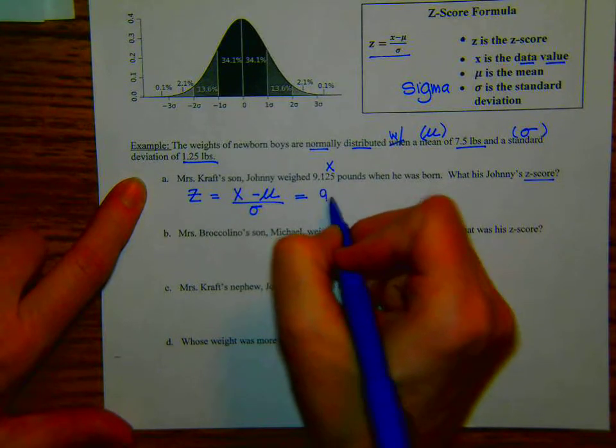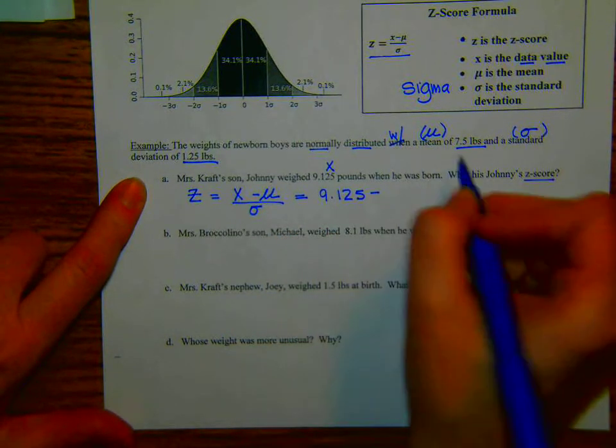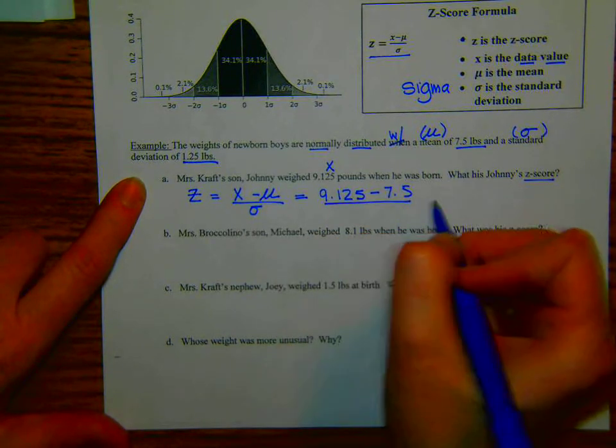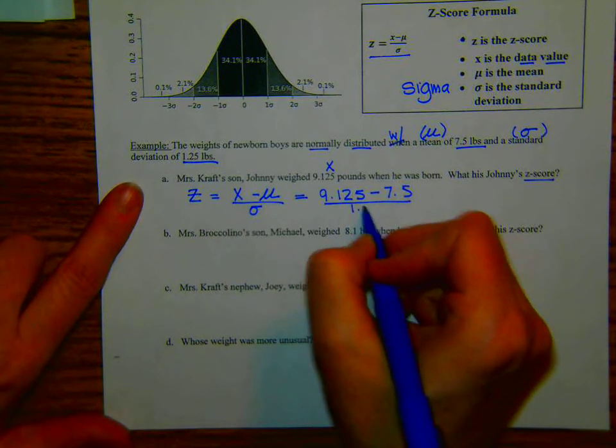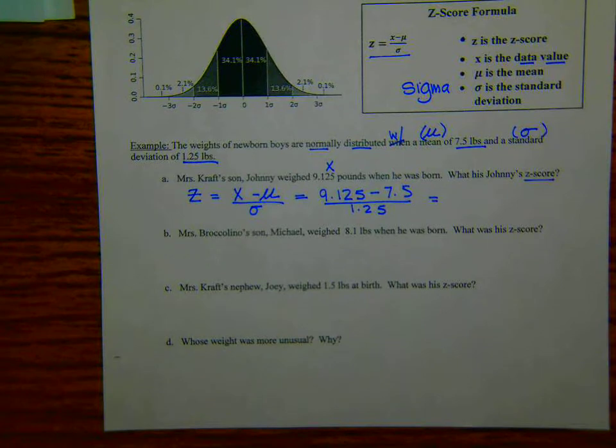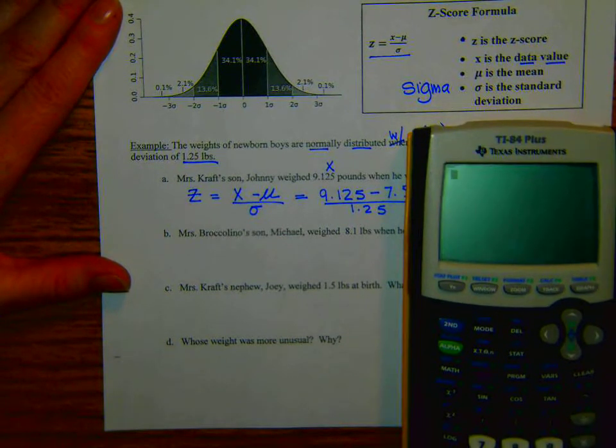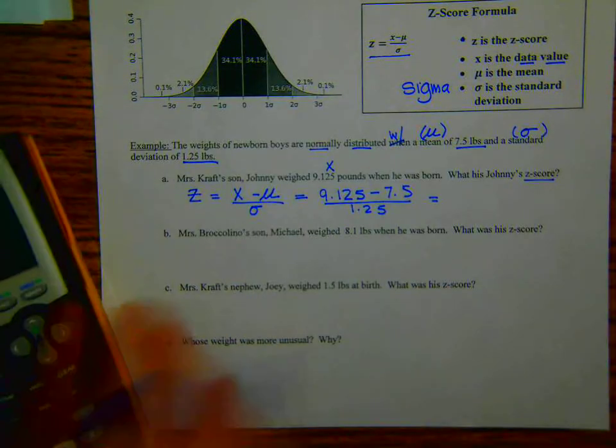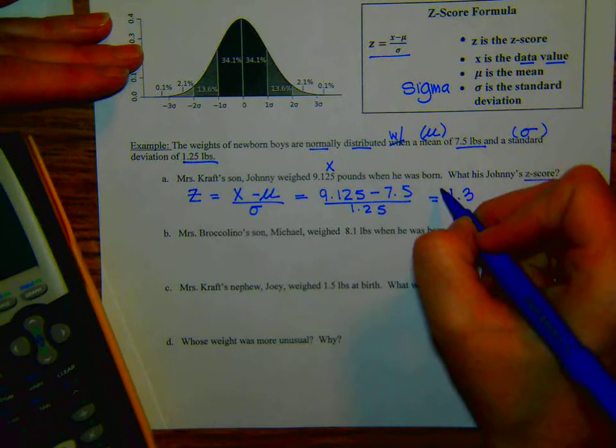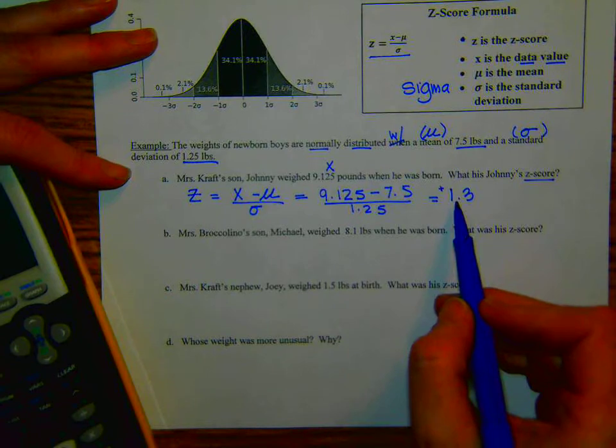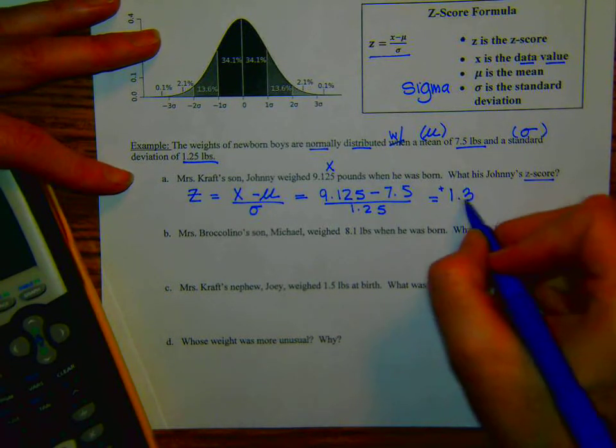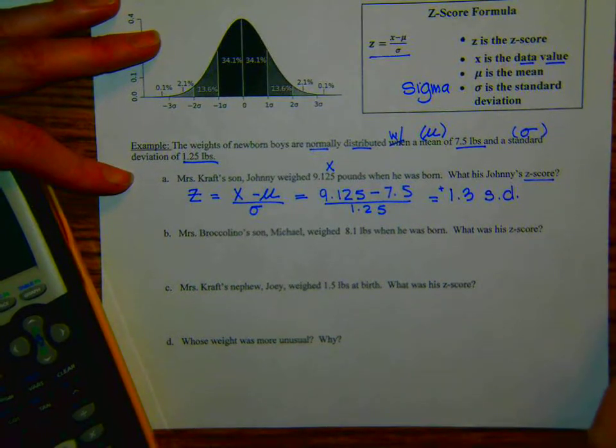Well, Johnny weighed 9.125 pounds minus the mean, the mean of baby boys is 7.5 divided by the standard deviation, which is 1.25 pounds. So pull out your calculator. So I'm going to, make sure you can see that, 9.125 minus 7.5. See that on the calculator? We're going to get that difference divided by 1.25. So we end up with 1.3. That's positive. So Johnny has a z-score of positive 1.3. That means that his birth weight was 1.3 standard deviations above the mean.